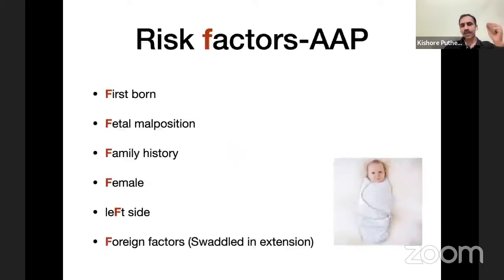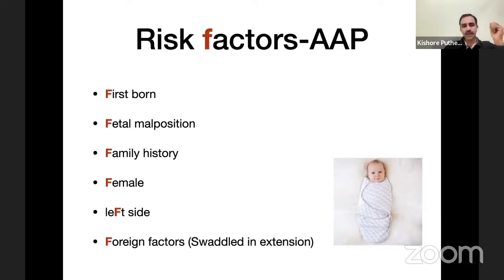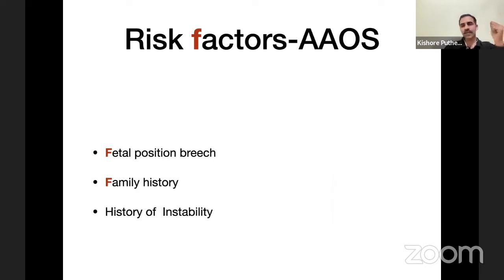According to AAP, the risk factors can be remembered by the letter F: first born, fetal malposition, breech presentation, female, family history, and foreign factors like swaddling. However, the American Association of Orthopaedic Surgeons recently considers only three major risk factors: breech fetal position, family history, and history of instability.